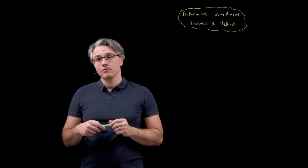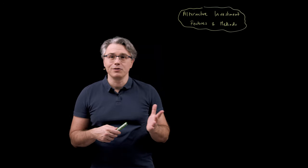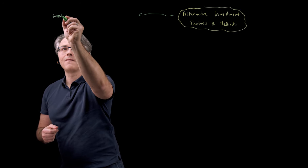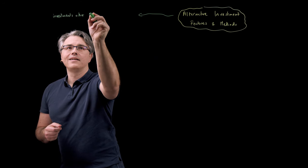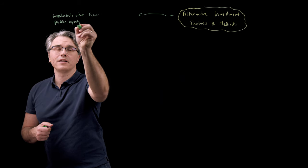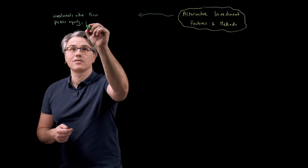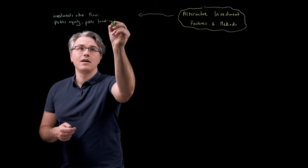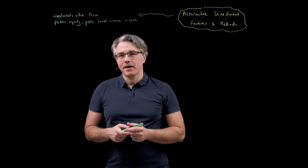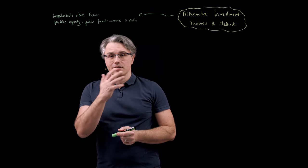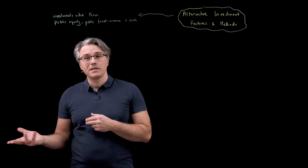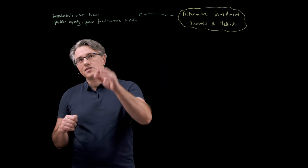Let's start by defining what alternative investments are. The curriculum defines this by saying what they are not. Alternative investments are investments other than public equity — meaning buying shares on public markets — public debt, so publicly traded fixed income instruments, and also cash instruments, which could be anything from keeping money at the bank on a term deposit to more tradable securities like treasury bills or commercial paper.